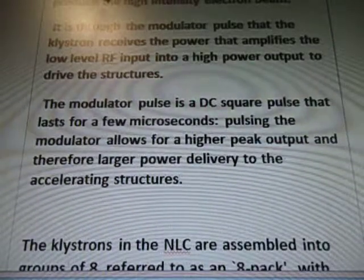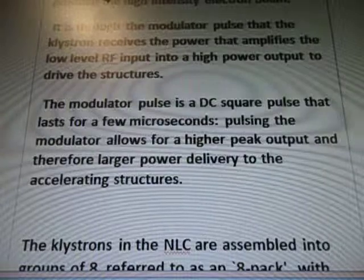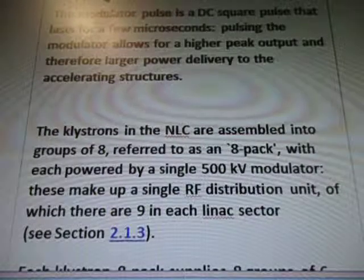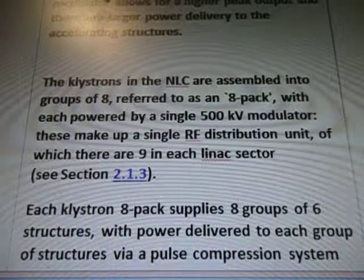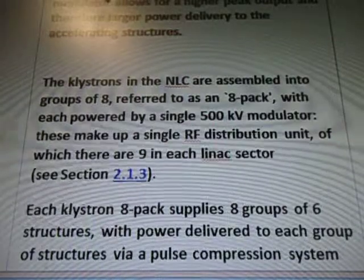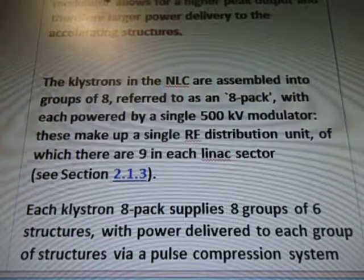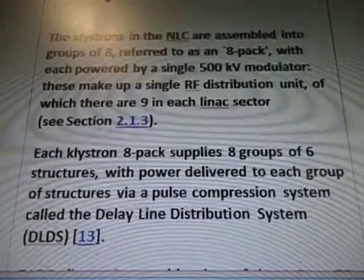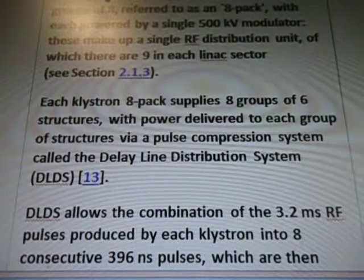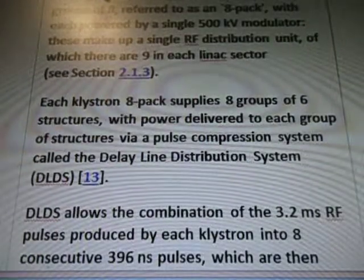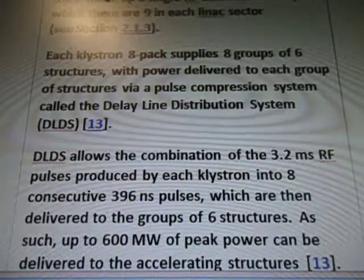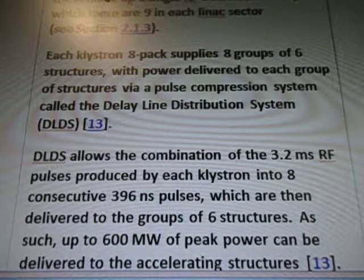Pulsing the modulator allows for a higher peak output and therefore a larger power delivery to the accelerating structures. The klystrons in the NLC are assembled into groups of 8, referred to as an 8-pack, with each powered by a single 500 kV modulator. These feed a single RF distribution unit, of which there are 9 in each linac sector. Each klystron 8-pack supplies 8 groups of 6 structures with power delivered to each group via a pulse compression system called the delay line redistribution system.